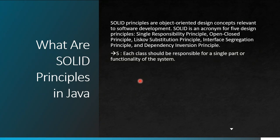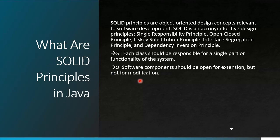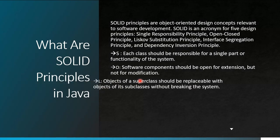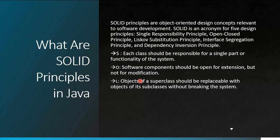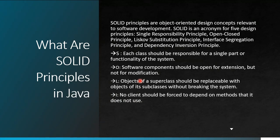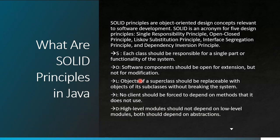Single Responsibility Principle means each class should be responsible for a single part or single functionality in the system. Open-Closed Principle states that a software component should be open for extension but not for modification. Liskov Substitution Principle states that objects of a superclass should be replaceable with objects of its subclass without breaking the system. Interface Segregation means no class should be forced to depend on methods it does not use. Dependency Inversion means high-level modules should not depend on low-level modules; everything should depend on abstraction.